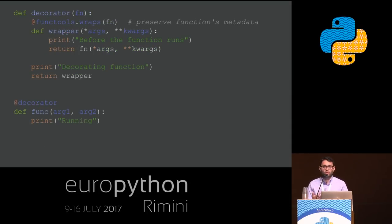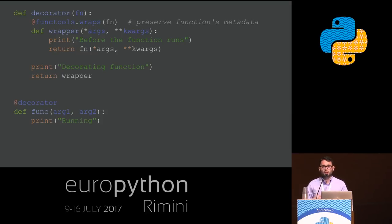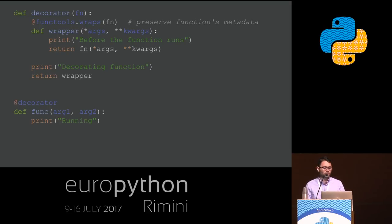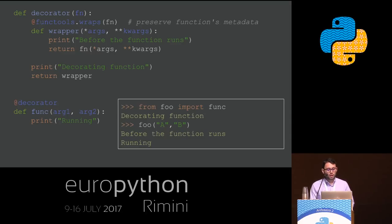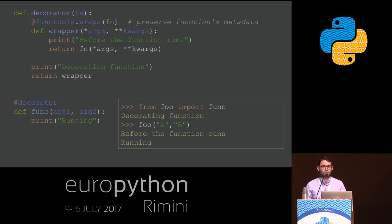Now, if we want to do something more useful with our decorators — like changing the way the function is called or saving the result into a cache — we need a wrapper function as well, defined inside the decorator. This wrapper function receives the arguments of the function you want to decorate. A piece of advice: if you want to write reusable code, just use *args and **kwargs so you don't need to care about what the function you're decorating takes as parameters. When executed, the decorator runs at import time and the wrapper code runs before the function executes.